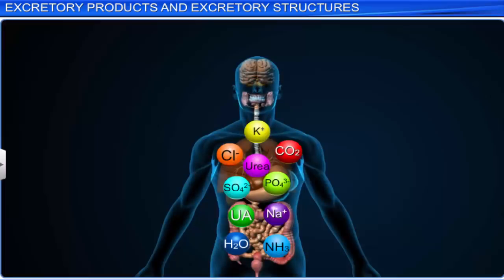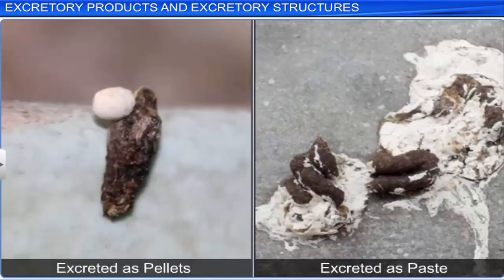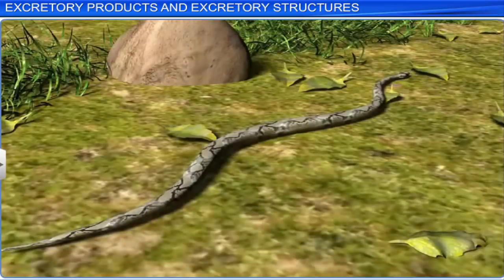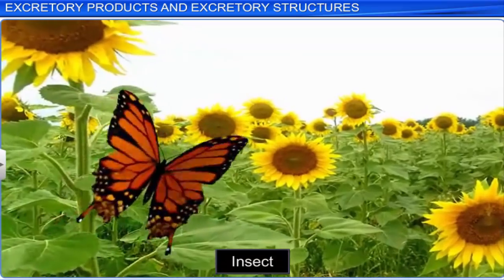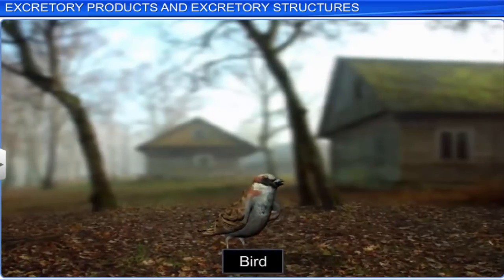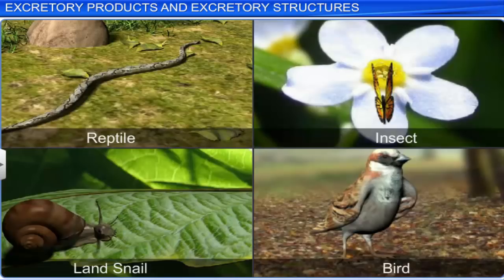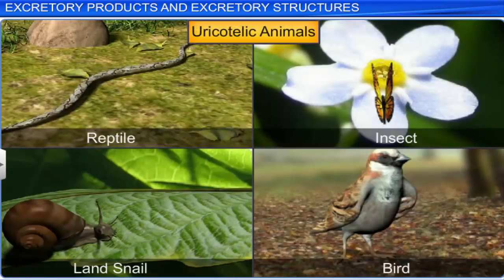The least toxic form of nitrogenous waste is uric acid. Though excretion of uric acid involves a lot of energy, it helps conserve water considerably, as it is excreted in the form of pellets or paste involving very little water. Some animals excreting uric acid are reptiles, insects, land snails, and birds. Such animals are called uricotelic, and the process is called uricotelism.